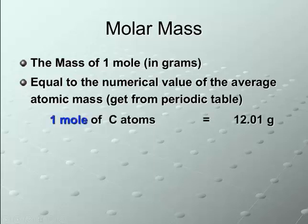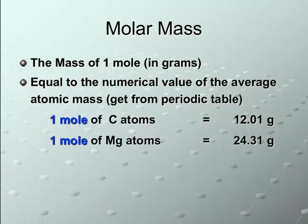So, if you look at the periodic table for carbon, we see that its atomic mass is 12.01 grams. So, one mole of carbon is 12 grams.